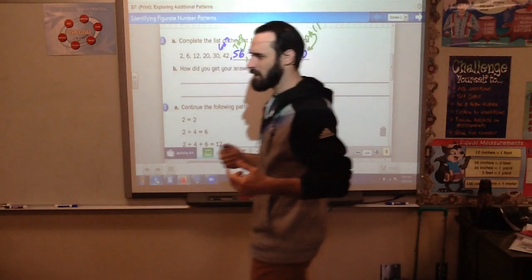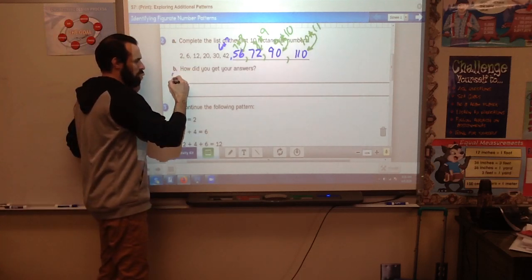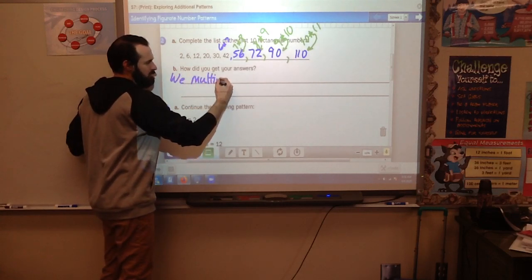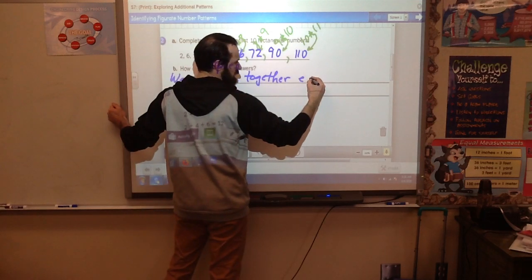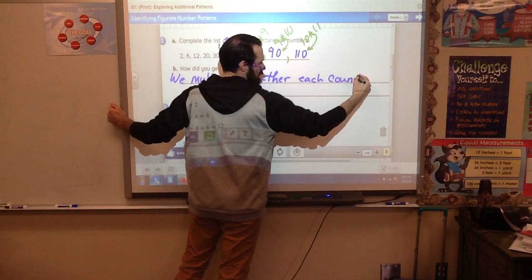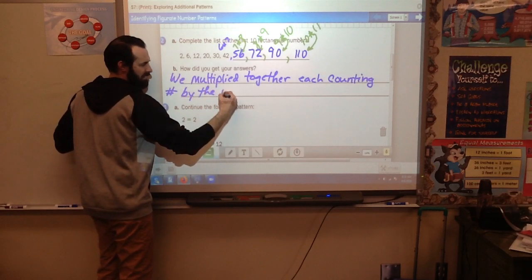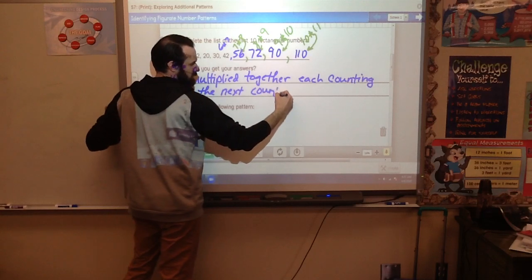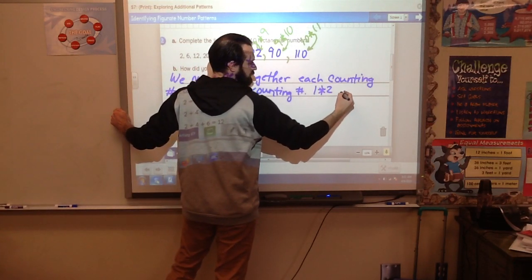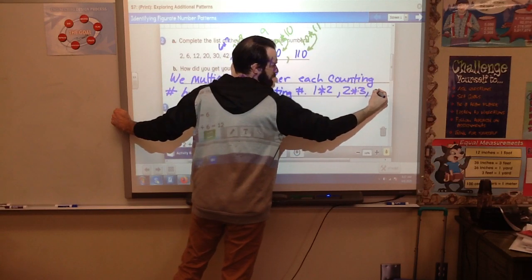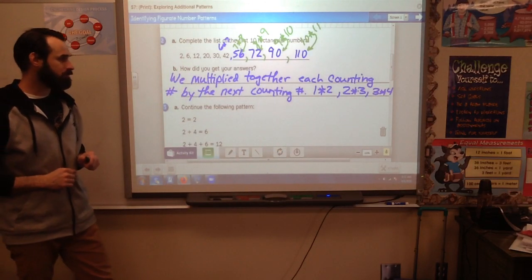How did you get your answers? That might be a little hard for you to write down. Here's what I would say: we multiplied together each counting number by the next, and then I'd give an example. I would go 1 times 2, 2 times 3, 3 times 4, and that's probably good enough. So make sure you get that down, and then we're going to go on to our next pattern.